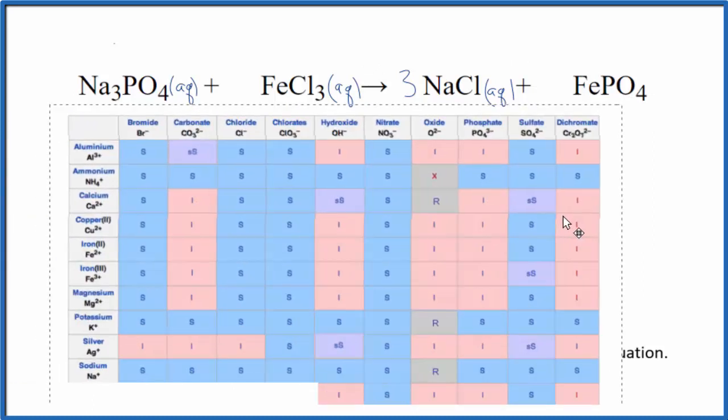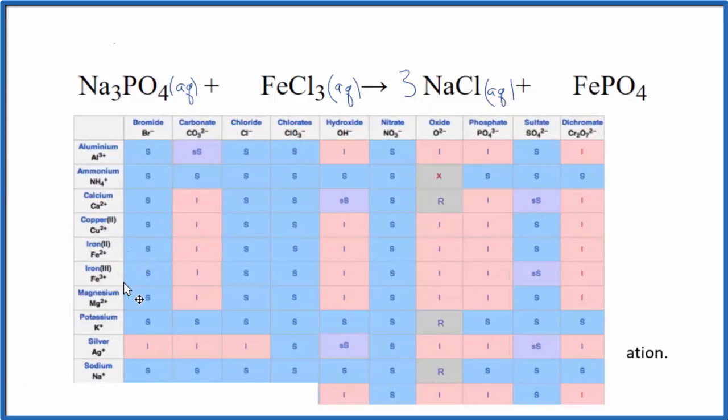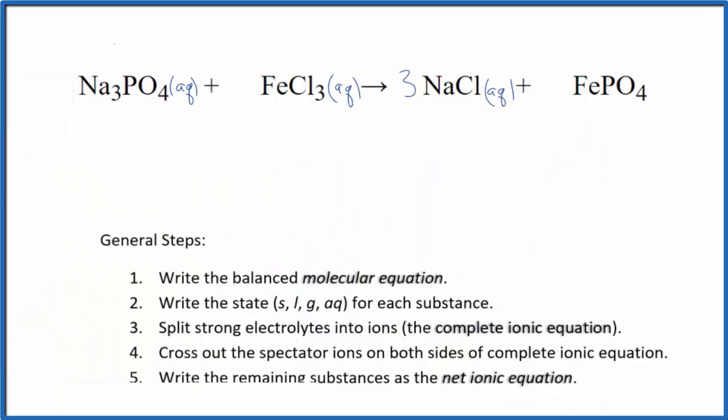So I want to check and look this one up here. We're looking for iron(III), all the way over here, phosphate. You see this I here, that means it's insoluble. Iron(III) phosphate's insoluble, it won't dissolve in water. So we're going to write an S because it's going to be a solid.